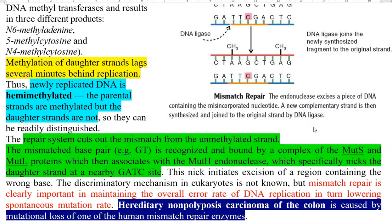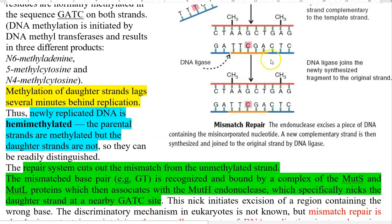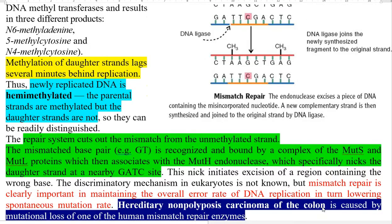The mismatched base pair — for example, G-T as shown in the diagram — is recognized and bound by a complex of MutS and MutL proteins, which then associate with MutH endonuclease. MutH specifically nicks the daughter strand at a nearby GATC site, initiating excision of the region containing the wrong base. The discriminatory mechanism in eukaryotes is still unknown, but mismatch repair is clearly important in maintaining the overall error rate of DNA replication, thereby lowering the spontaneous mutation rate inside the cell.